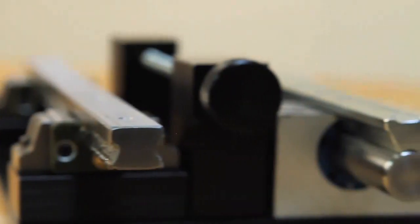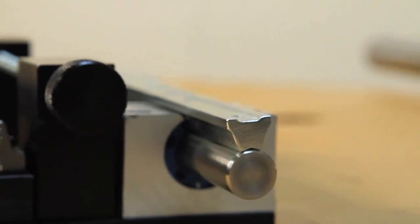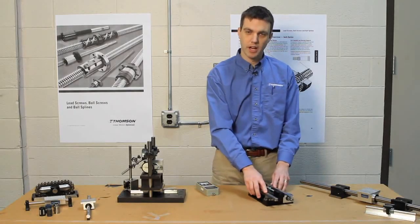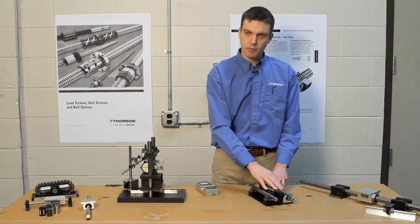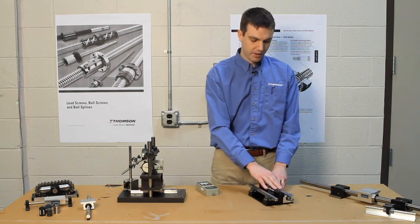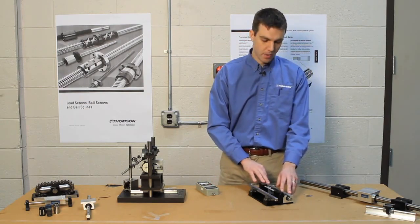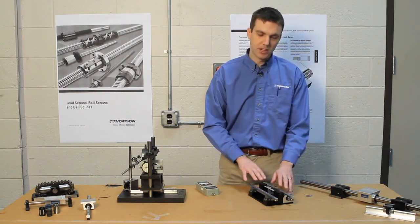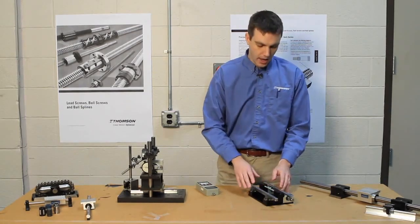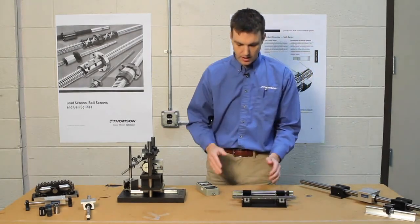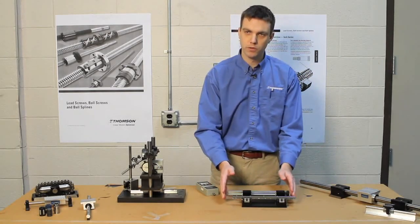So this is what we call the misalignment rig. One big problem we run into with users is they'll spec in the square rail type instead of a round rail when really the round rail would have been more advantageous because round rail is inherently, for the most part, self-aligning. And so it's much easier to install. And what we're going to show here is some of the differences you'll find in the push force required to move your bearing.